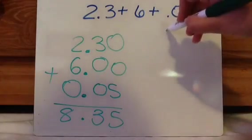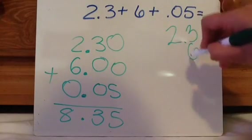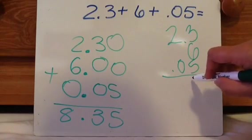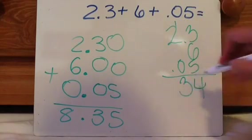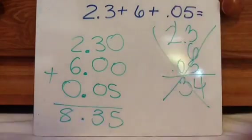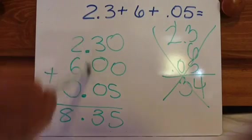A lot of times people will do 2.3 plus 6 plus 0.05 and then they just do that kind of addition and then they're like, well wait, where does the decimal go? You cannot do this. The main rule is line up those decimals.